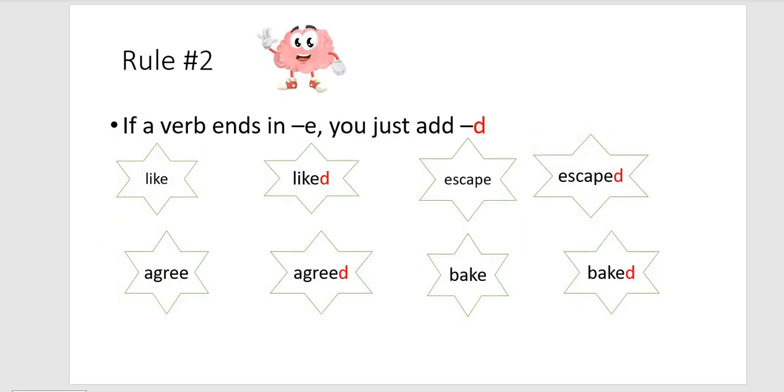Rule number two. If a verb ends in e you just add a d because already there is an e to the main verb in the present tense. So by just adding a d you will change the verb from the present tense into the past tense.